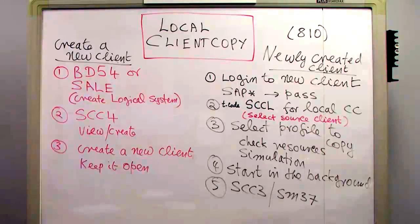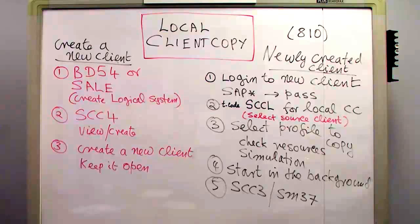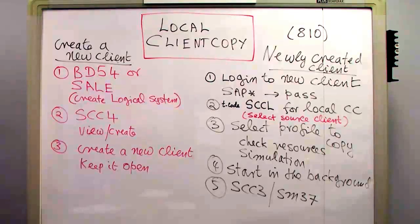To see the log, I type transaction SCC3. To check what percentage of the background job is done, I type transaction SM37. After the client copy is complete, I log into the target client as one of the users from the source client and test whether everything has been copied correctly. This completes the local client copy process.